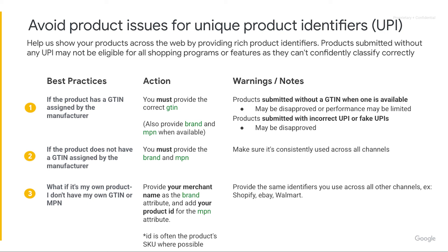The importance of providing rich product identifiers is to help us show your products across the web. Products submitted without any unique product identifiers may not be eligible for all shopping programs or features, as they can't be confidently classified correctly. To summarize unique product identifiers: if your product has a GTIN assigned by the manufacturer, you must provide the correct GTIN and provide brand and MPN when available. If your product doesn't have a GTIN assigned by a manufacturer, you must provide the brand and MPN and make sure it's consistently used across all channels.